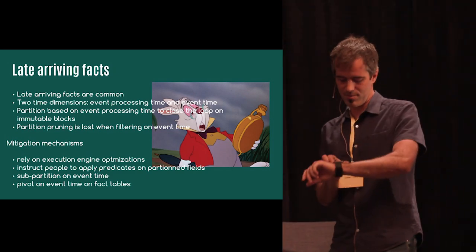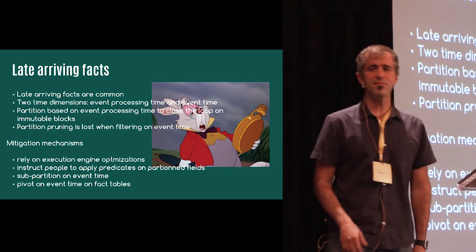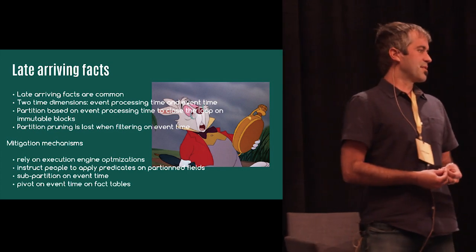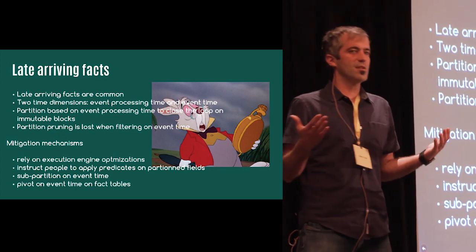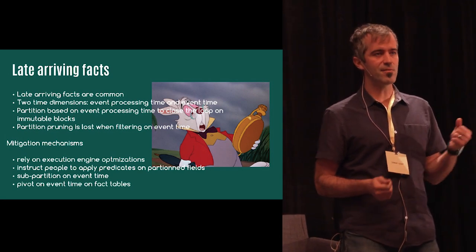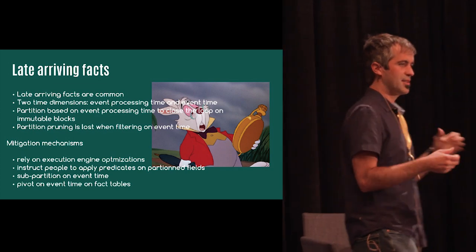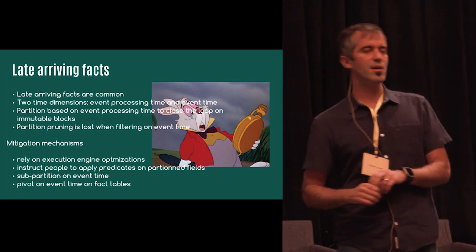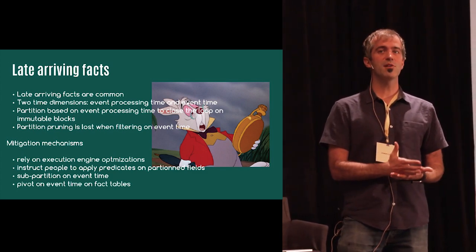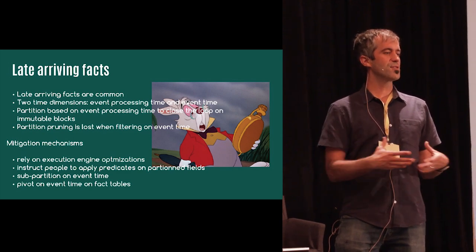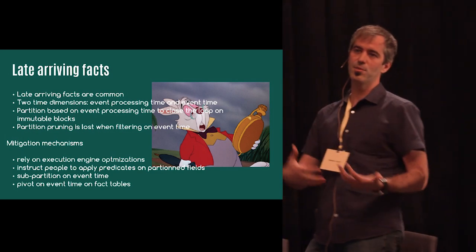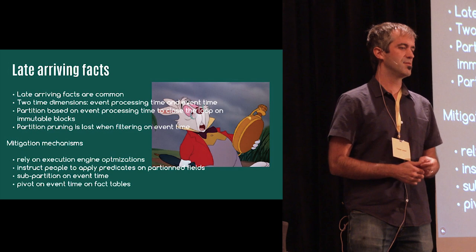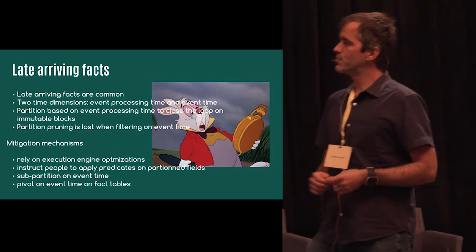Late arriving facts are common. If you have them, you need two time dimensions in your data warehouse: event time and event processing time. If you care about immutability — landing data in your staging area and indexing it into ORC or Parquet files — you need to close the loop by partitioning on event processing time. Partitioning purely on event time would require waiting for the window to close, which takes longer and requires more data in memory.